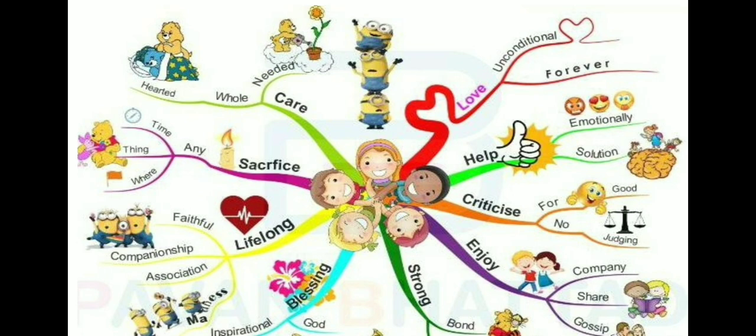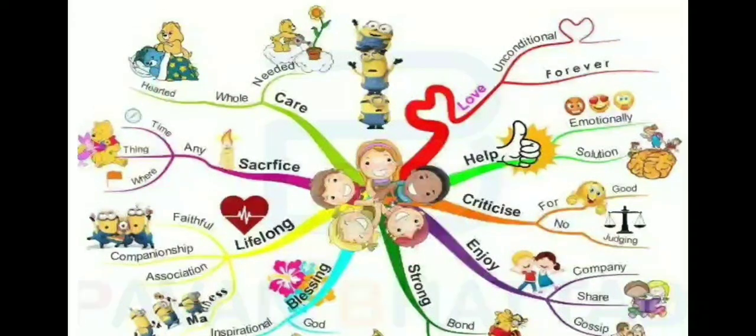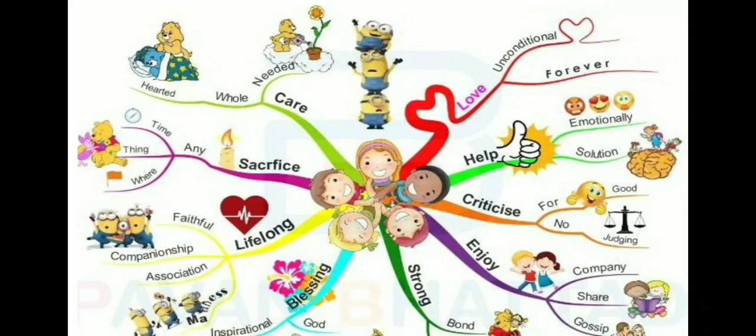Now let's see, as you can see the main concept is friendship. As you can see there are five friends who are together and there are certain branches. Then from that thinking, the branches that emerge: if we see the first branch on the right side, we have love, help, criticize, enjoy, strong, blessing, lifelong, sacrifice, care.